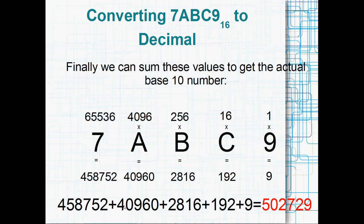Okay, and then the final thing to do is just sum each of those up. So 458,752 plus 40,960 plus 2,816 plus 192 plus 9 gives you 502,729. So 7ABC9 in hexadecimal is exactly the same number as 502,729 in decimal. They mean exactly the same thing. It's the same value.